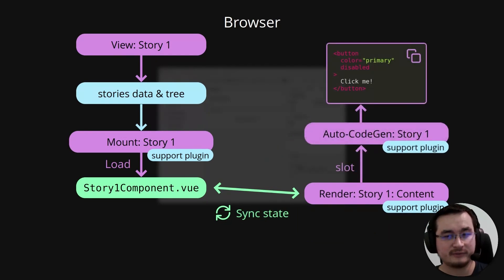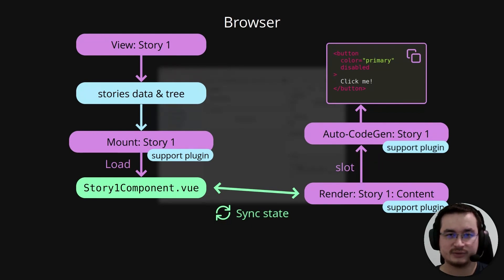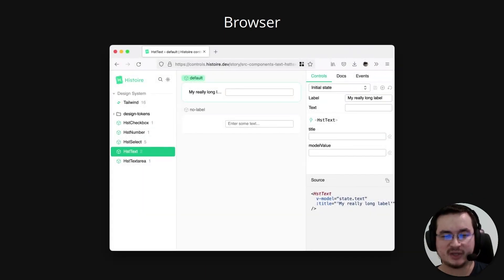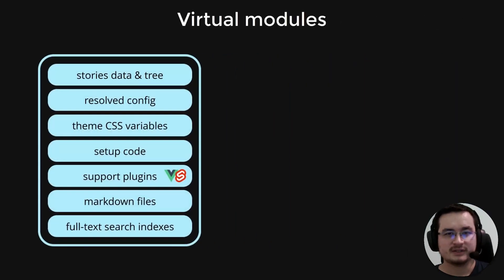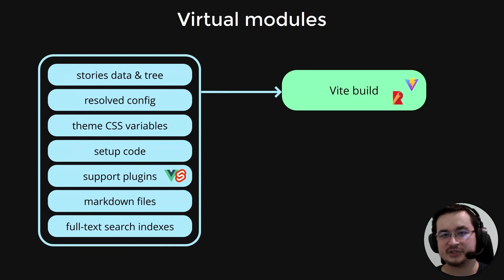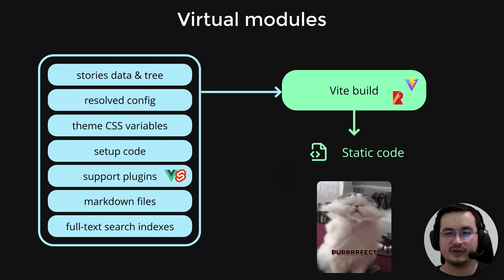Another interesting feature of Histoire is generating source code that you can copy and paste into your project. Imagine you display a story about a button and want to reuse the final result you see in the story inside your actual application — this feature allows you to do just that with a copy and paste. And the nice thing about virtual modules is that when you run the Vite build to compile your Histoire application in production, it will automatically turn those virtual modules into static code, which is perfect to deploy your Histoire application in production where you don't have a Vite development server.